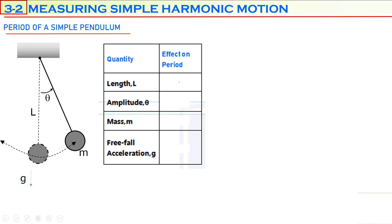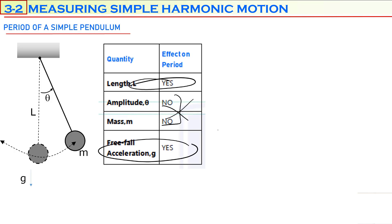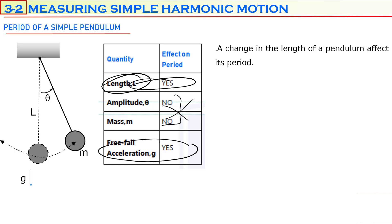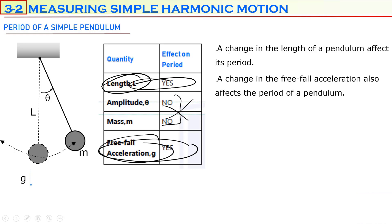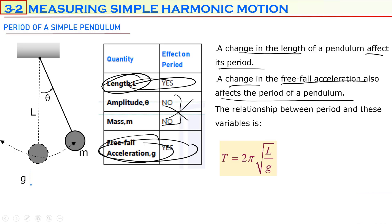To summarize: length has an effect on the period — yes. Amplitude has an effect on the period — no. Mass of the bob has an effect on the period — no. Free-fall acceleration of the environment has an effect on the period — yes. So two quantities affect the period: length and free-fall acceleration. That's why the equation for the period includes these two quantities. The equation for the period of a simple pendulum is T = 2π times the square root of L over g.